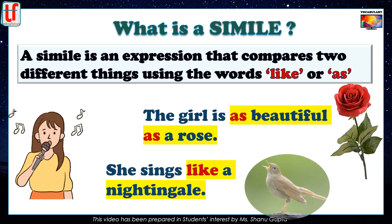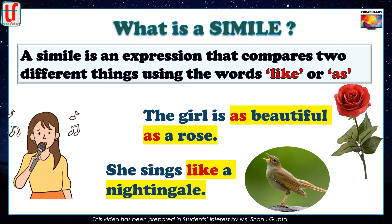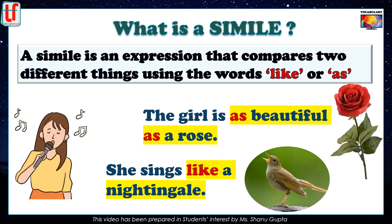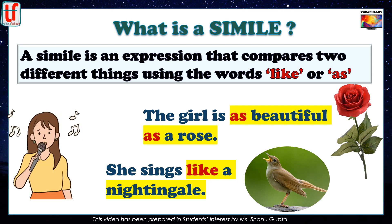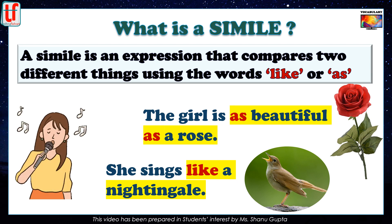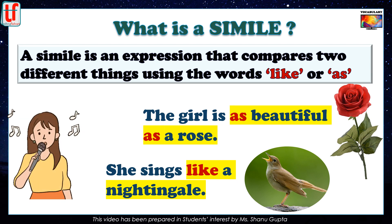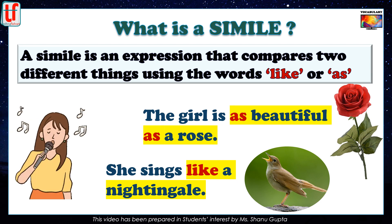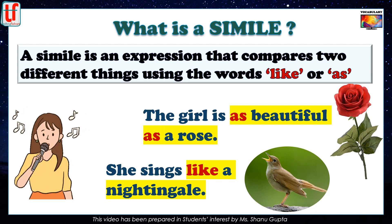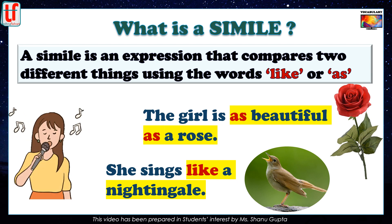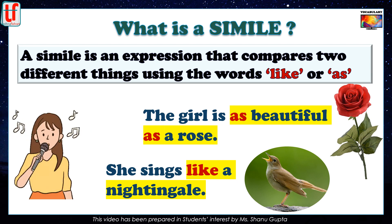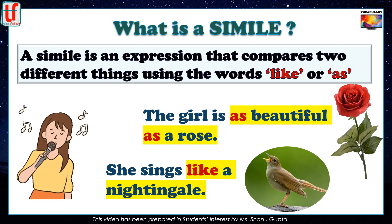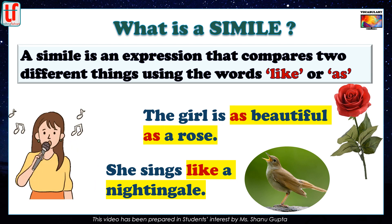Another one: she sings like a nightingale. The expression 'sings like a nightingale' is a simile because I am comparing the singing of this girl to that of a nightingale. Similes usually follow a regular pattern, so they are easy to identify in a sentence. It's very important for all English learners to know the well-known similes so that they understand the language that contains them. Now let's have a look at the common ones.